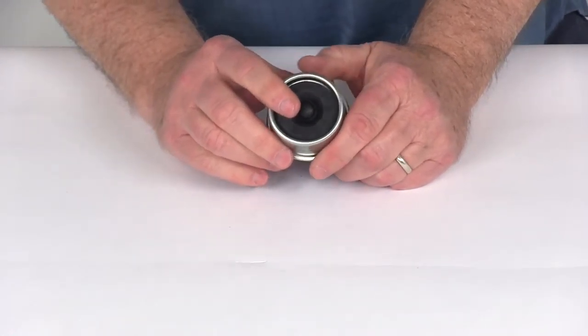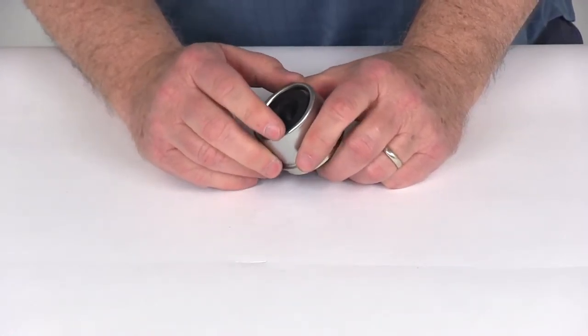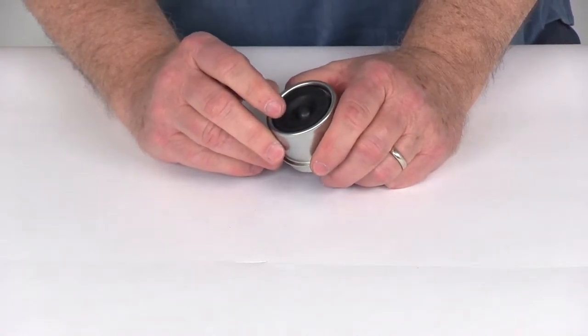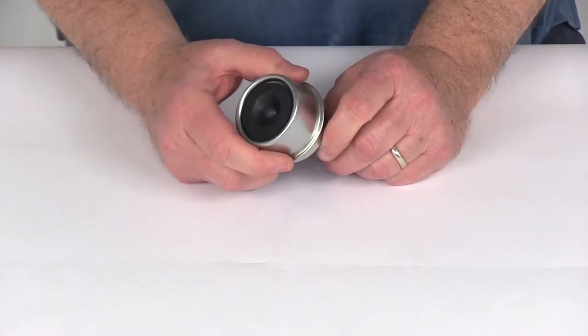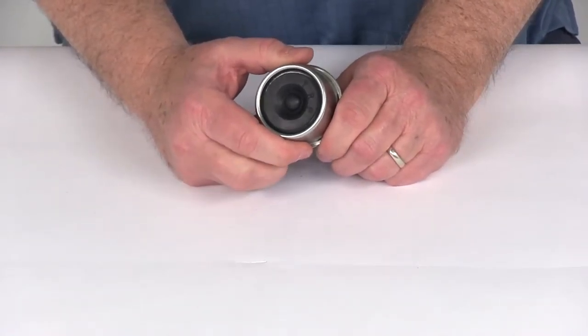Now the Easy Lube Axels that this fits on have a grease zerk fitting on the end of the spindle that allows you to grease the bearings without having to remove the complete hub assembly. This Easy Lube Compatible Grease Cap will make lubricating the bearings very fast and easy.